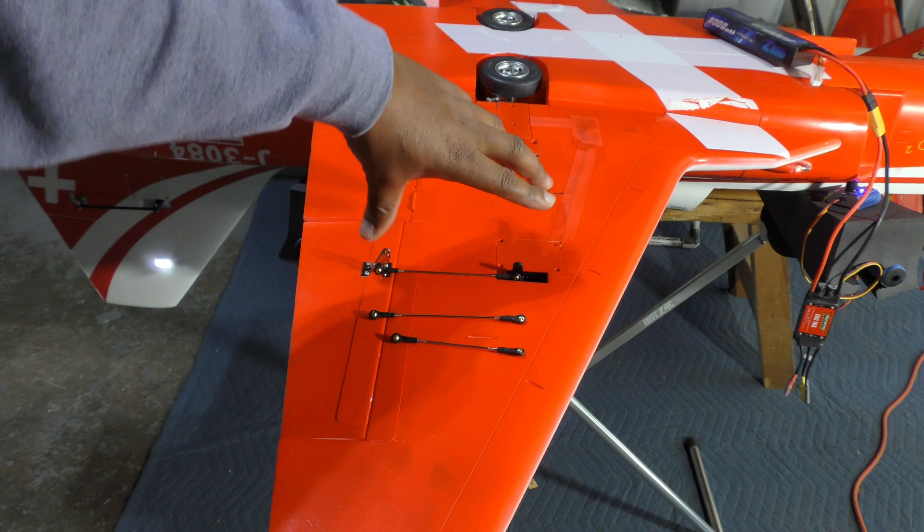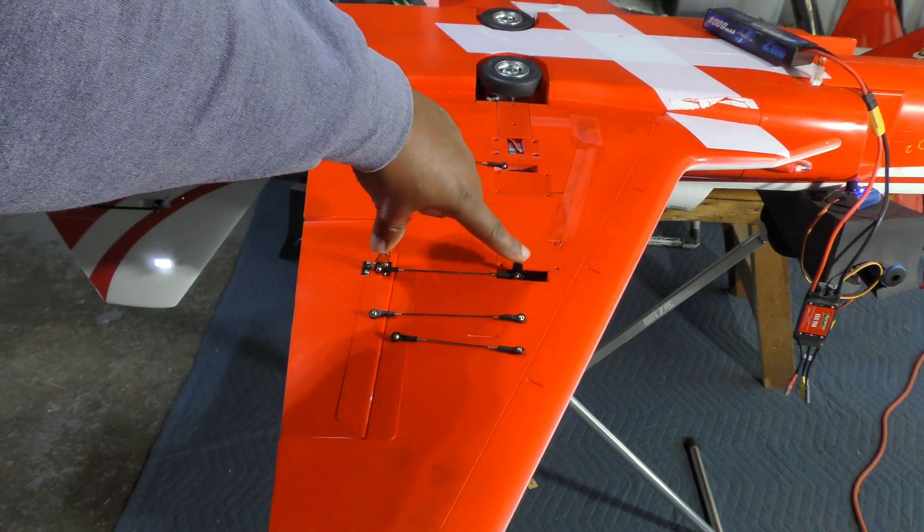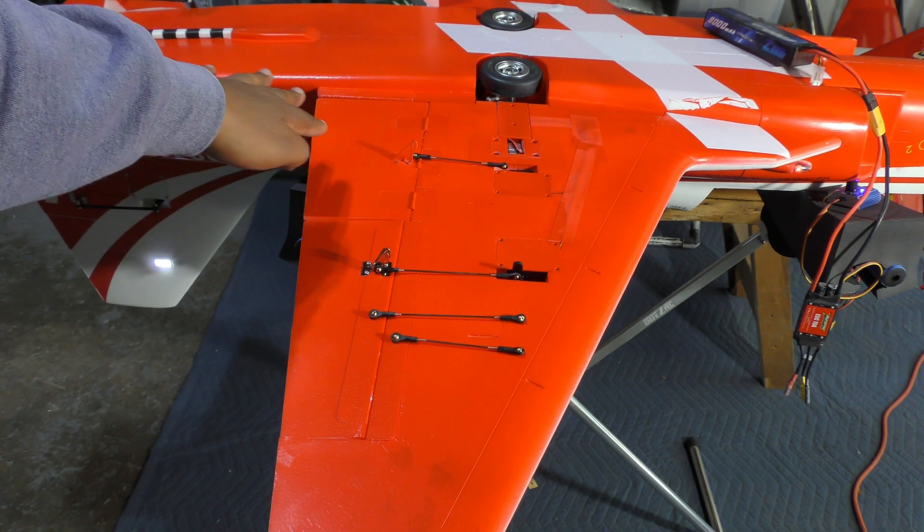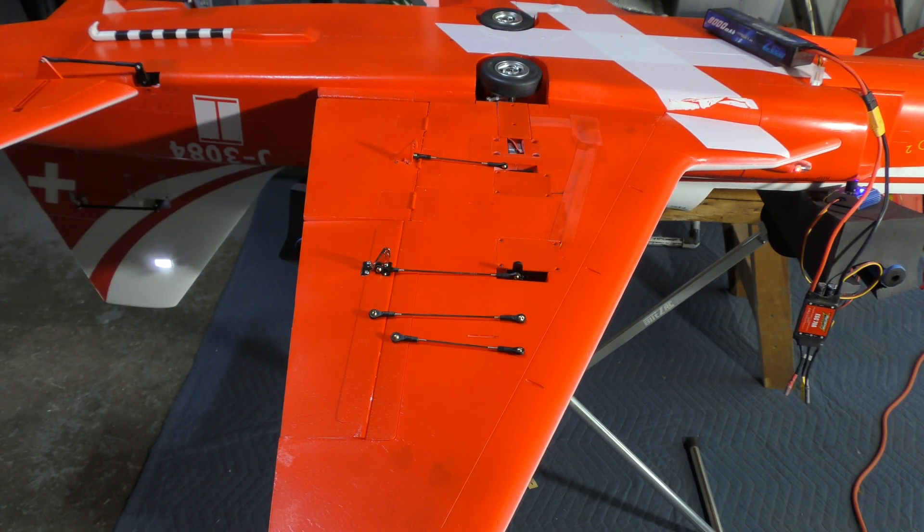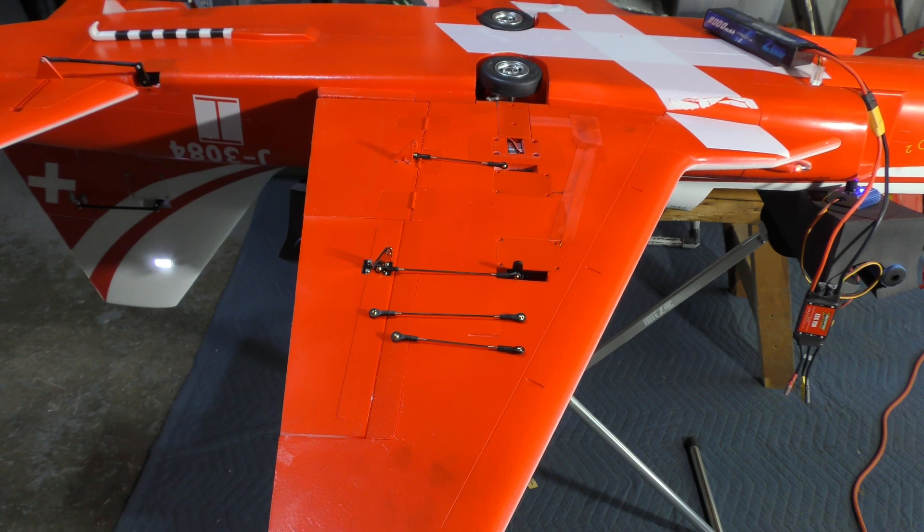There's power to the servos. Servos are centered, and I'm going to install the control linkages for both ailerons. I will leave the flaps because I want to get that done once I have my setup ready to go, because flaps go only one way. I don't want to burn anything out, so those will stay undone for now.